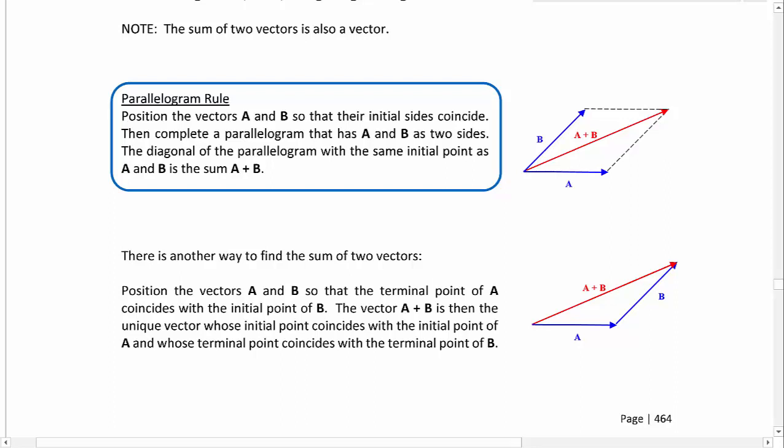There is another way to find the sum of two vectors, although we use parallelogram rule probably the most in application problems. What you can do is position the vectors A and B so the terminal point of A coincides with the initial point of B. So you're kind of putting them like beginning to end. The vector A plus B is then the unique vector whose initial point coincides with the initial point of A and whose terminal point coincides with the terminal point of B.